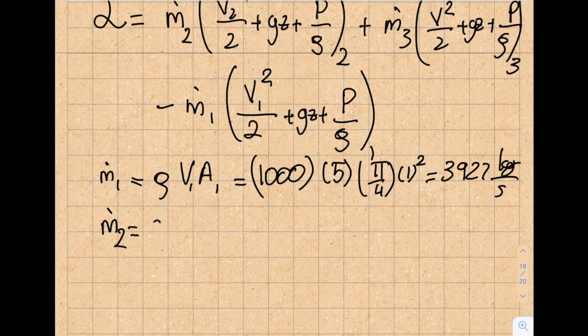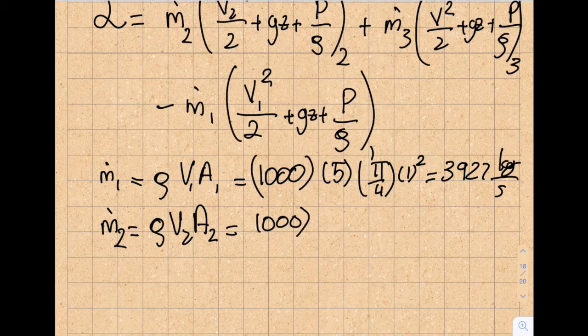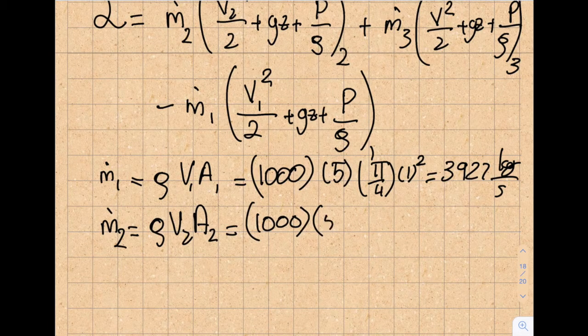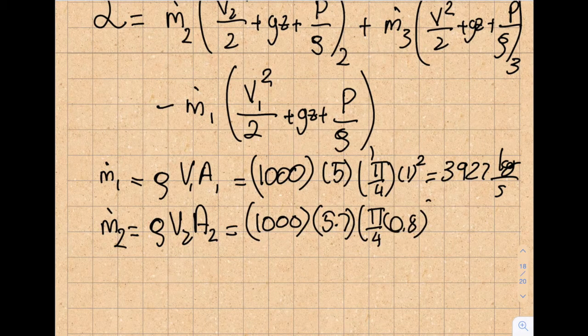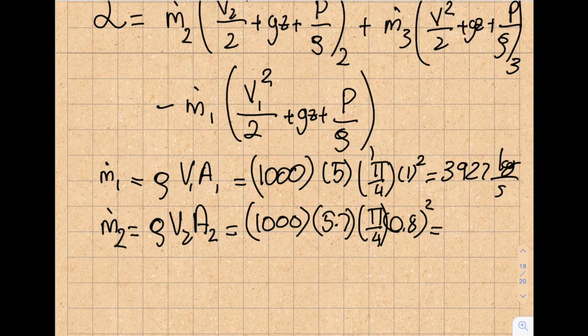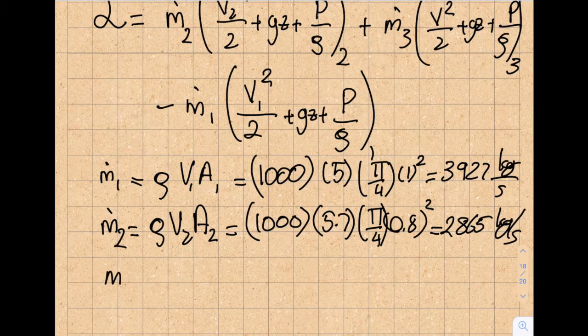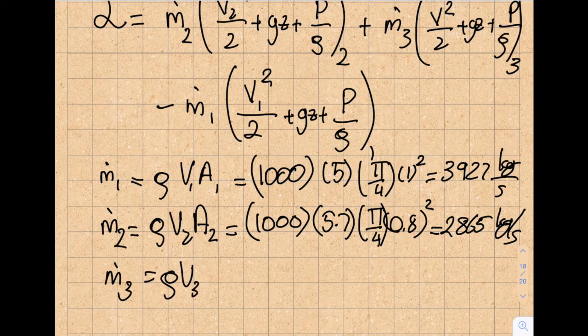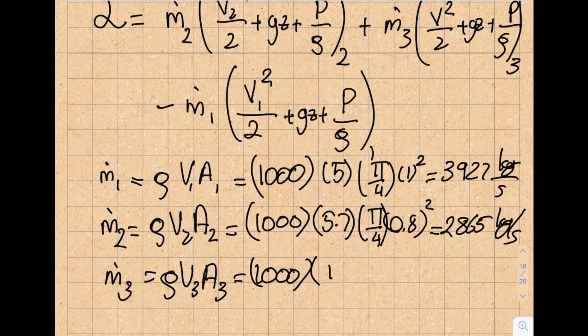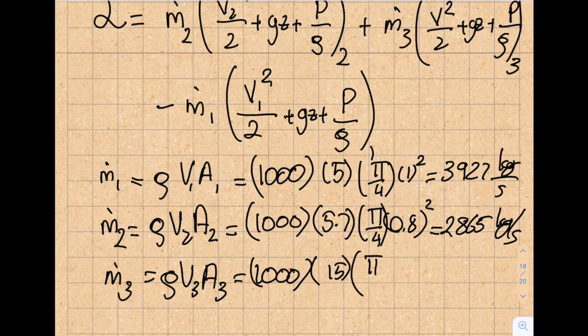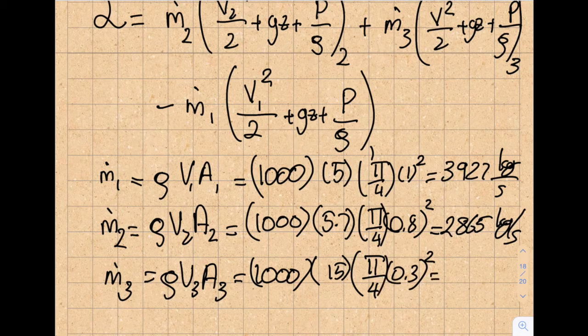If I do the second one, ṁ2 will equal ρ·v2·A2, which is 1000 times the velocity 2, which is 5.7, times π/4 times 0.8 squared. If I do my math, I'm going to get 2865 kilograms per second. Let's do the same thing for ṁ3. That will be ρ·v3·A3, which is 1000 for density, v3 will be 15, times π/4 times 0.3 squared, and from here I'll get 1060 kilograms per second.